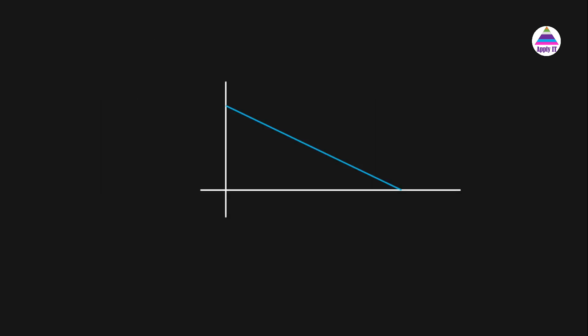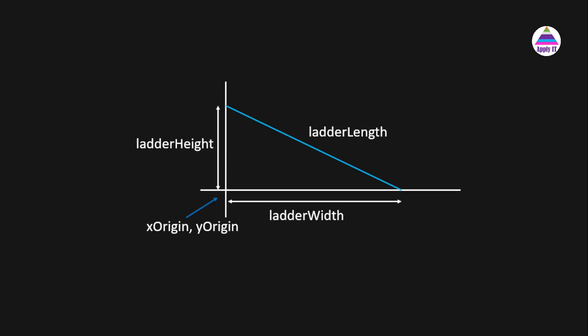The white lines represent the wall and ground surface, and the blue line represents the ladder we want to animate. We have taken a center point which is x-origin and y-origin. All drawing operations will be performed with reference to this x-origin and y-origin, so if we change them the whole setup shifts to another location.